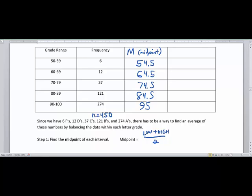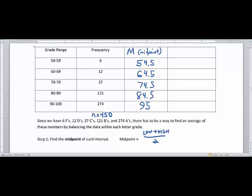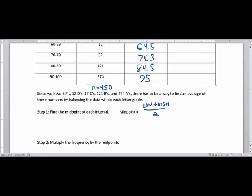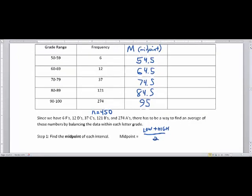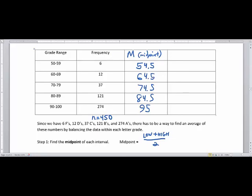You'll notice that maybe you thought I was just going to move up by 10 each time, but since this last grade range has 11 numbers instead of 10, the midpoint is 95. There are five numbers to the left and five numbers to the right. Now that you found the midpoint of each of your classes, we will go to the next step, which is step 2. Multiply the frequency by the midpoints. The frequency is going to be denoted by the letter F.